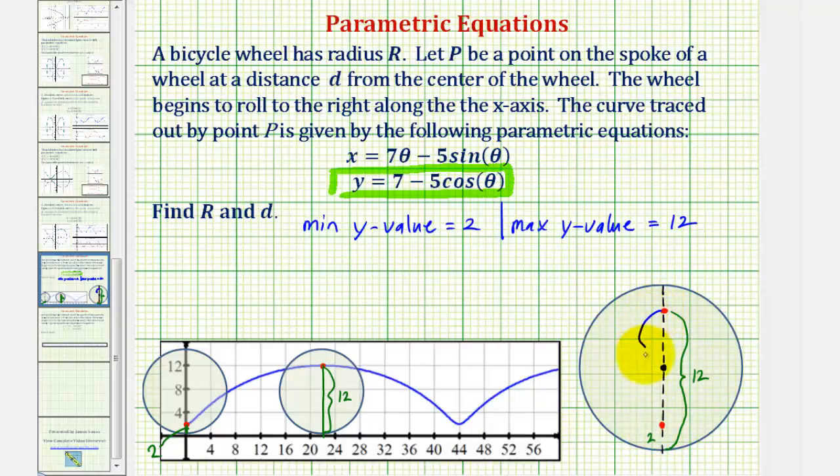which means this length here would have to be 12 minus two or 10 units. So if this is 10 units, notice how the distance the point is from the center of the circle would have to be half of this or five.